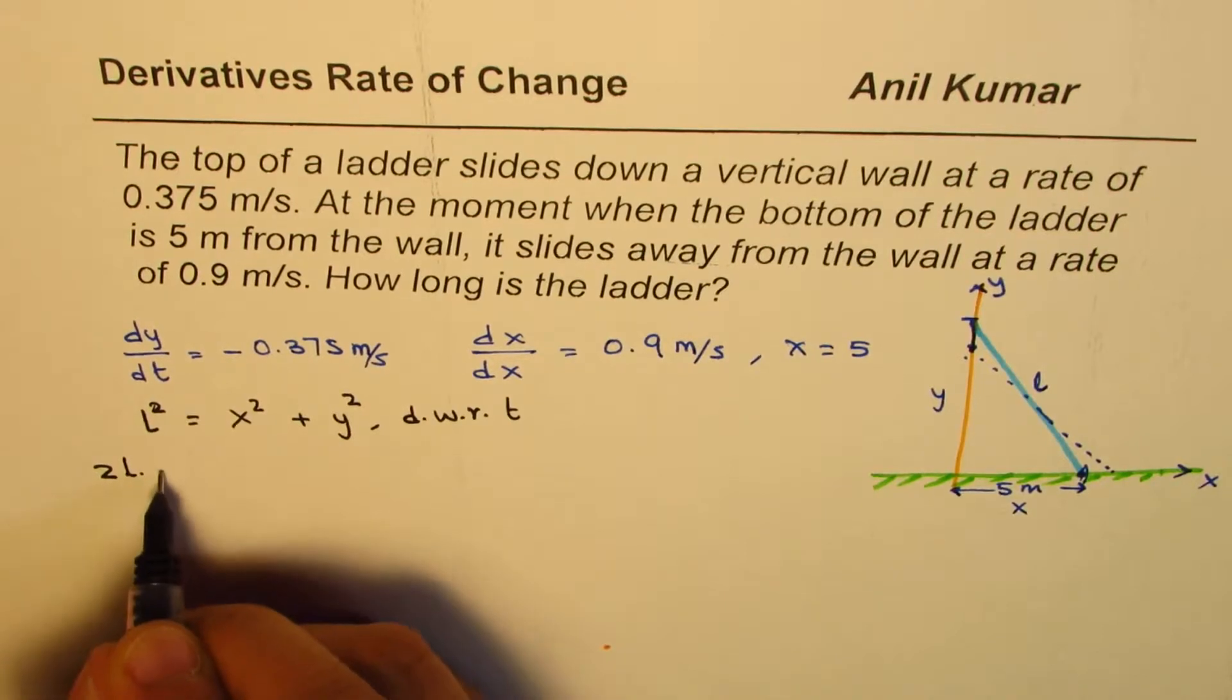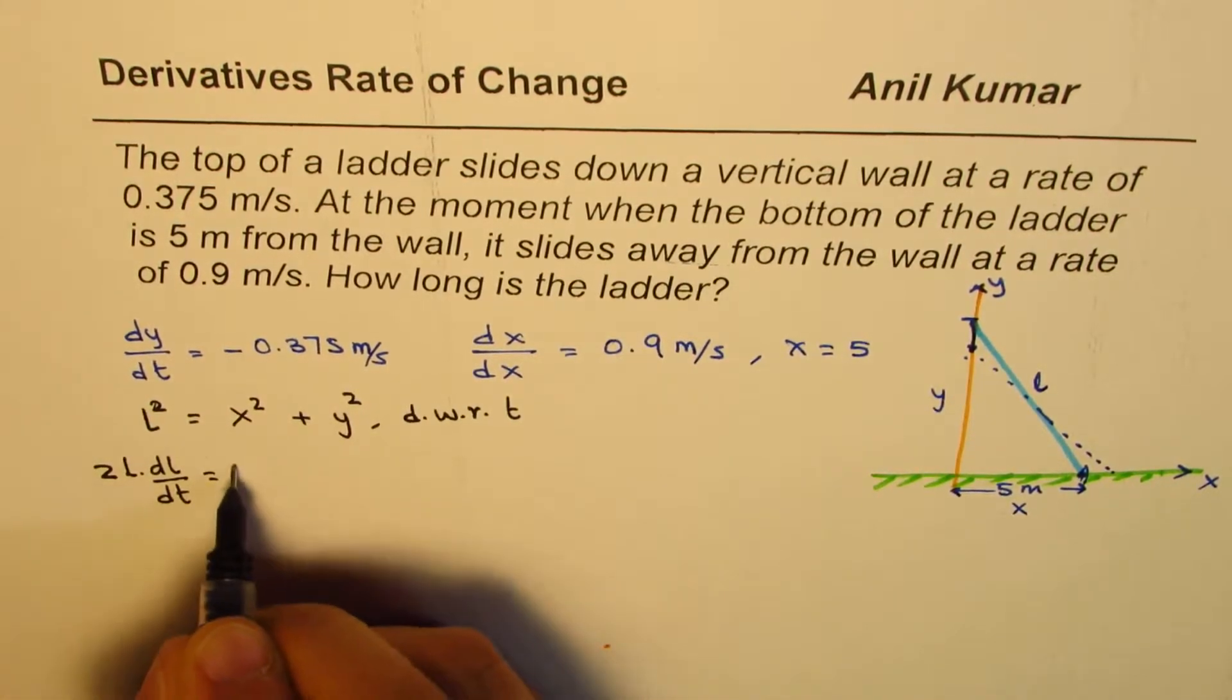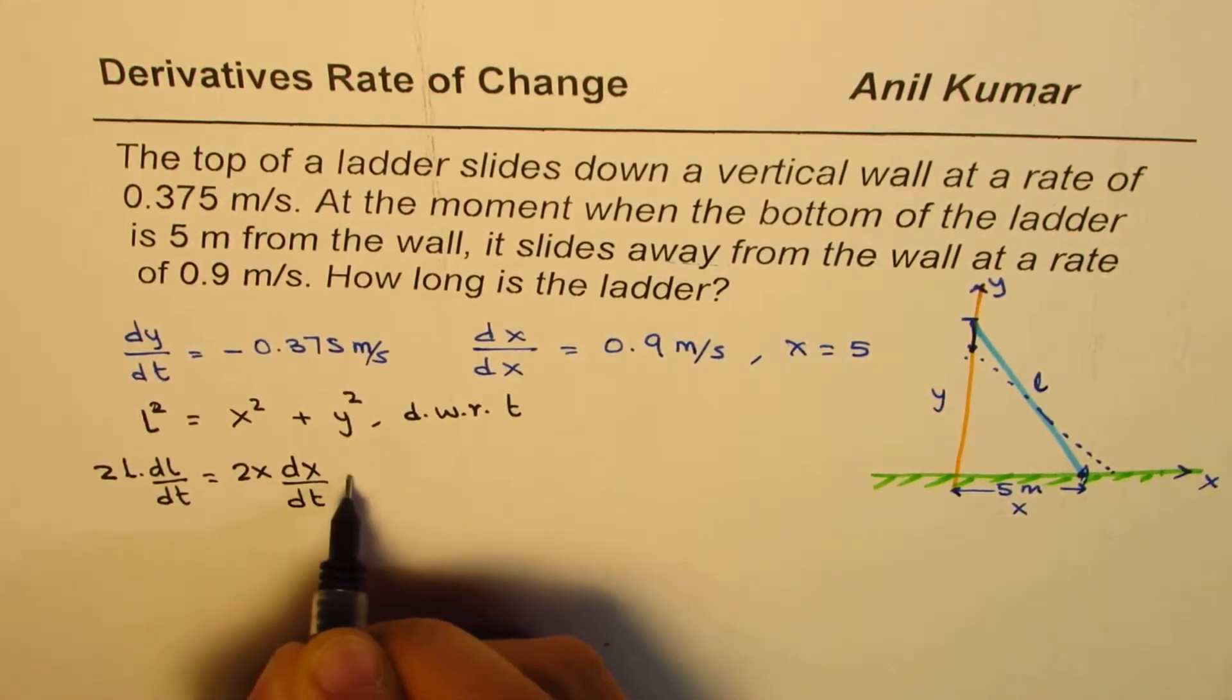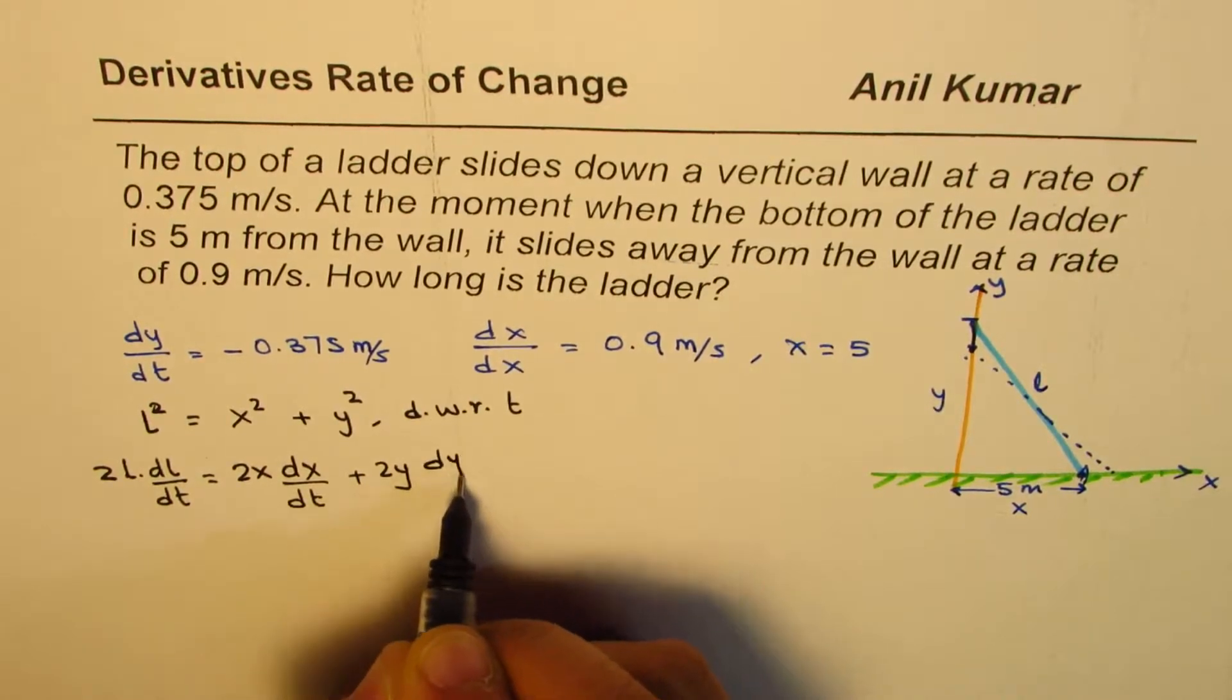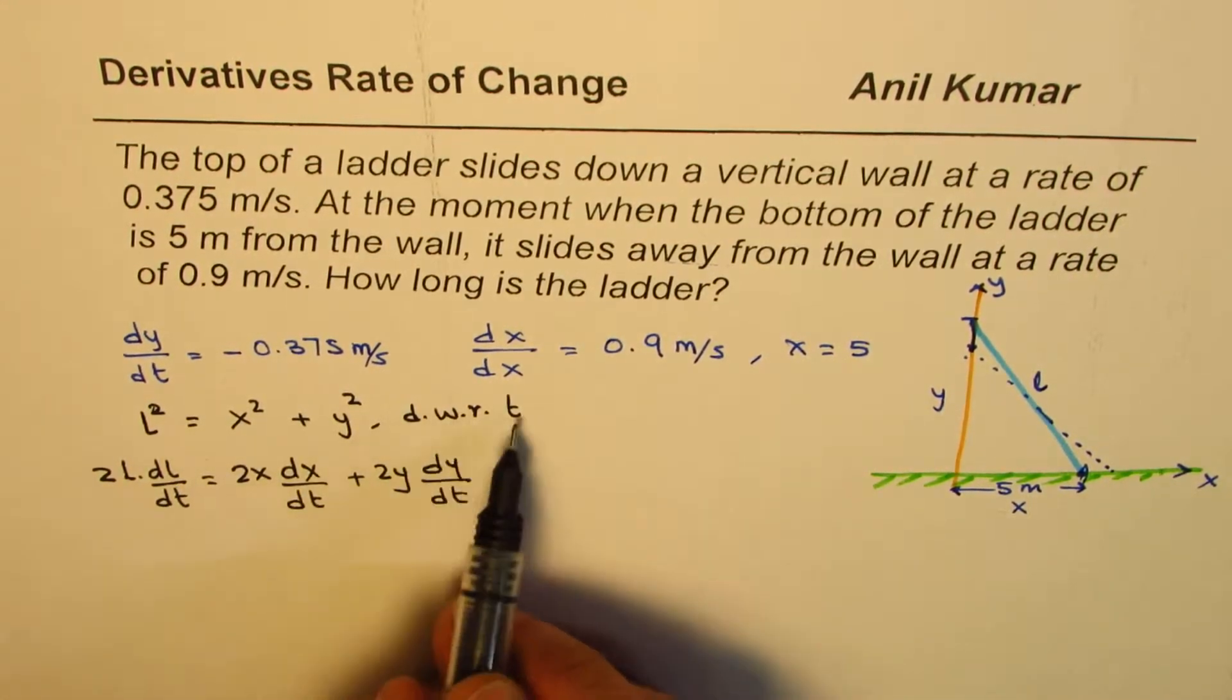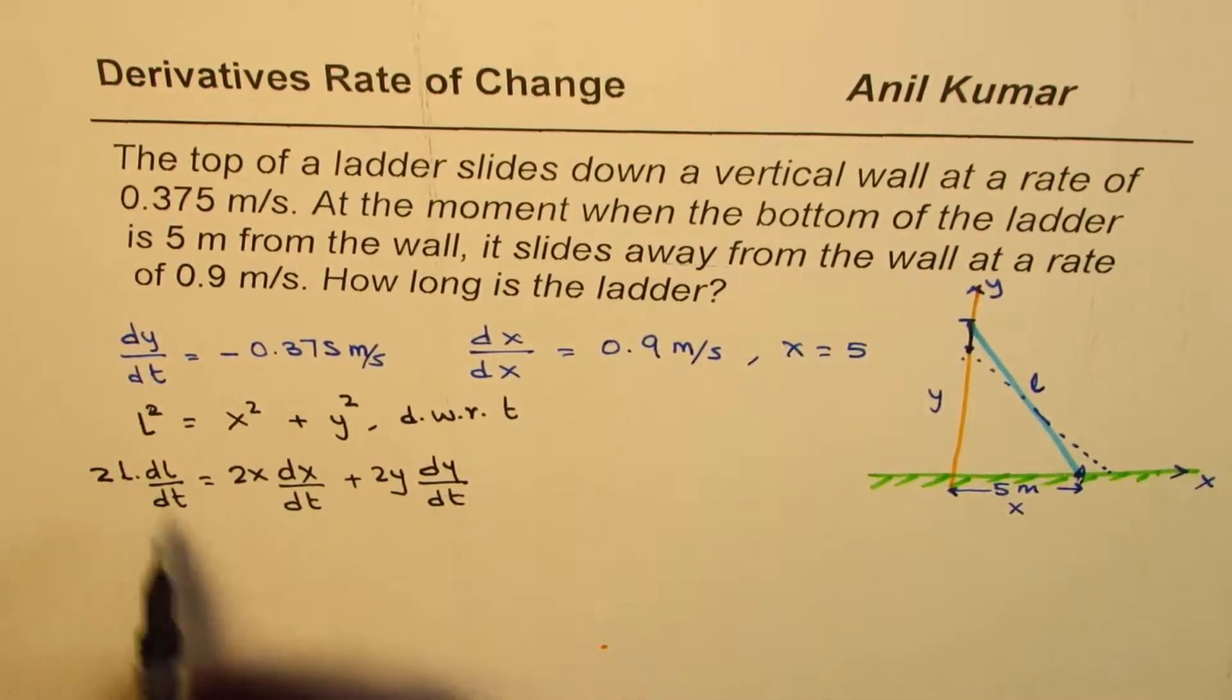Equals 2x(dx/dt) plus 2y(dy/dt), right? So we differentiated the whole equation with respect to time.